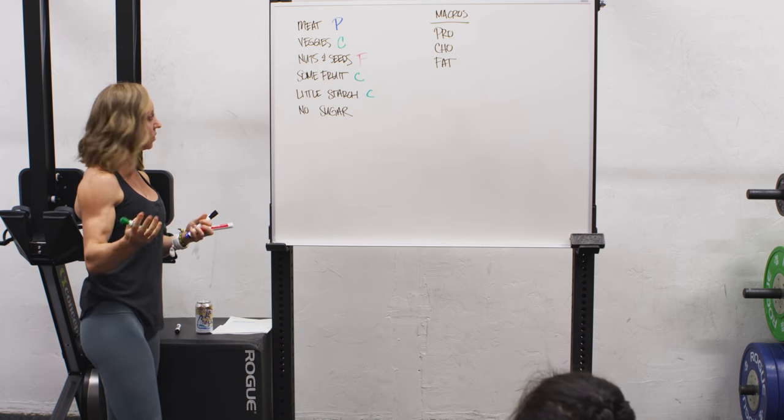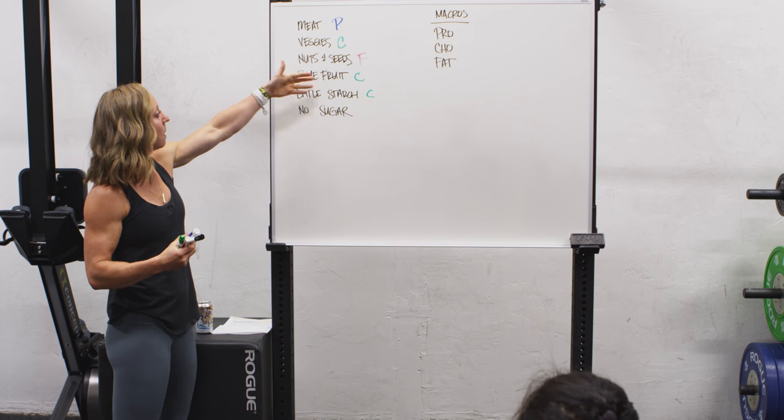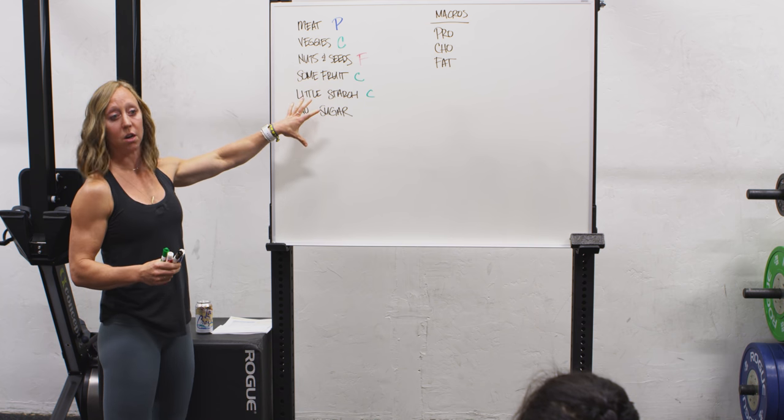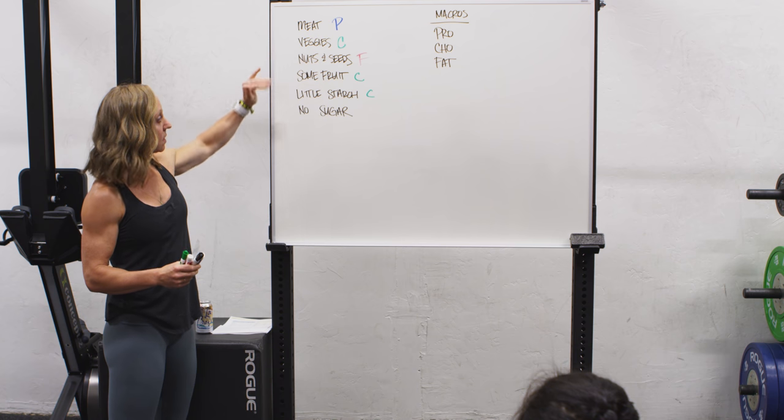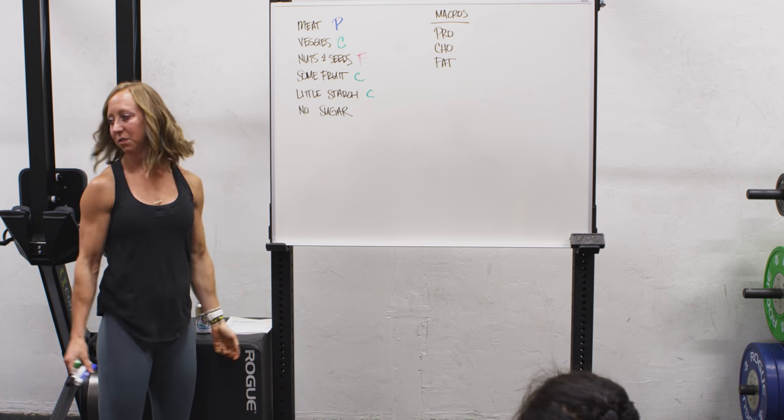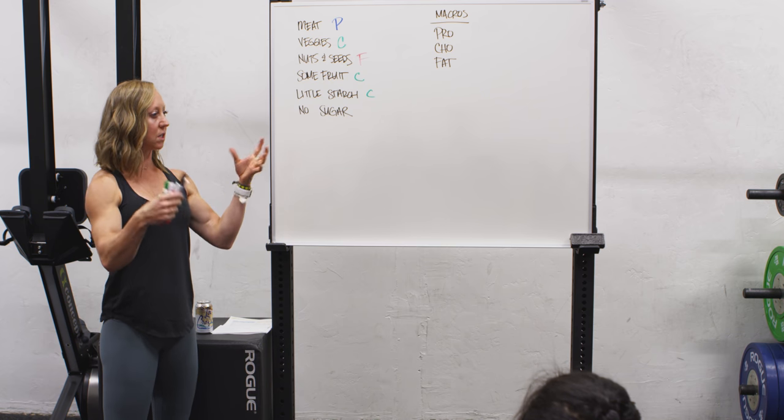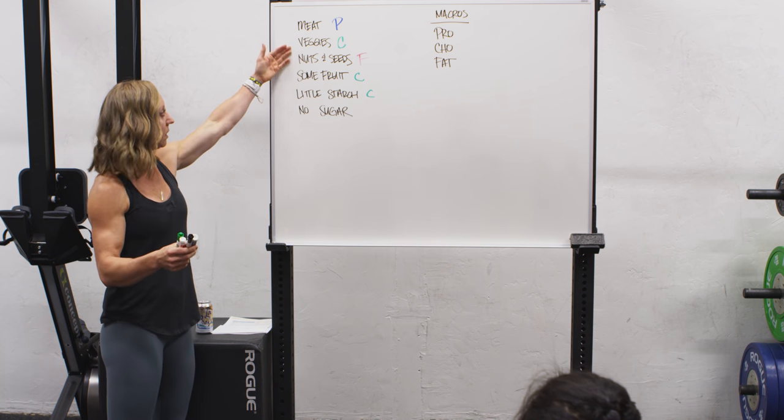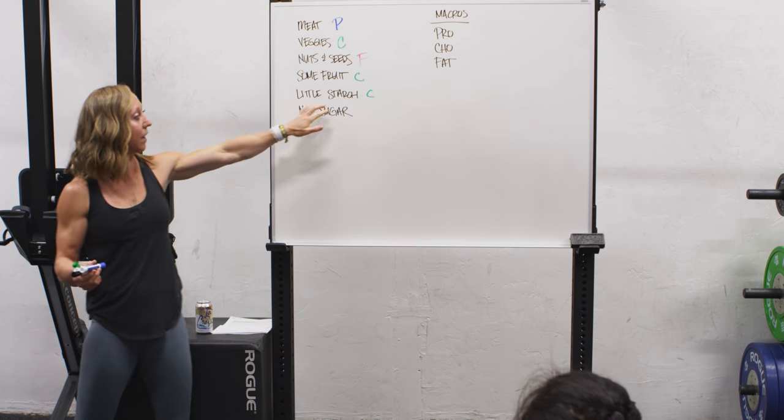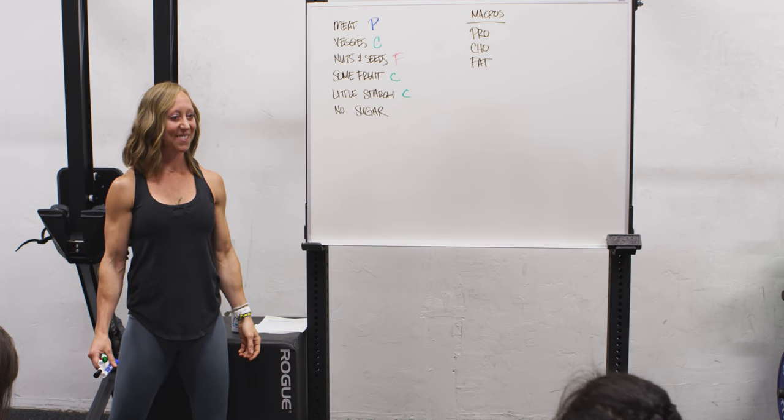Usually a common question is, it says some fruit - how much is that? What does that mean? When you're looking at this list, where to start with your nutrition - meat, veggies, nuts and seeds, some fruit, little starch, no sugar. When you look at some, just think of some as eating less fruit than you do vegetable. Don't get too worried about it. Fill your plate with green stuff and cruciferous veggies and spinach and all the things you know are good for you, and then eat less fruit than you do that. And then it says little starch. There's a higher carbohydrate load in starches, so eat less starch than you do fruit. That's little starch. Easy.